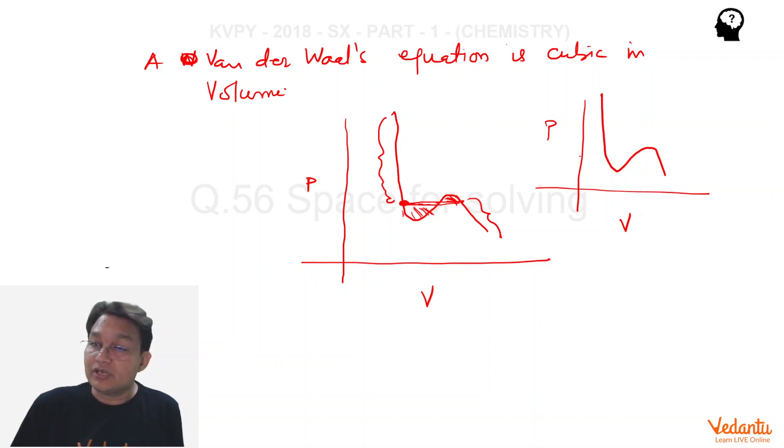For any cubic equation and you can see that justification is this that corresponding to a value of P at a given T, corresponding to a given value of P and T, of course that T is constant. We have three volumes, that's called V1, V2 and V3 and we all know that a cubic equation has three different solutions.